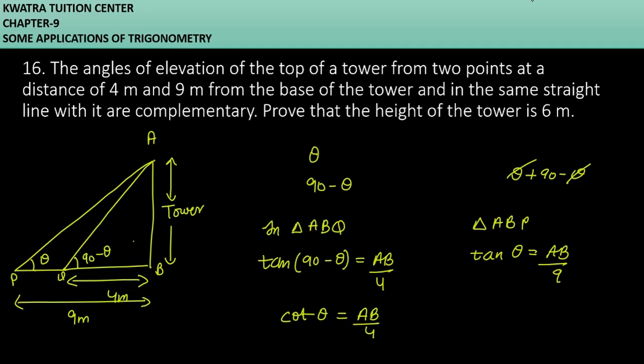The value of tan(90 minus theta) is cot theta. The other, tan theta, is given here AB over 9.